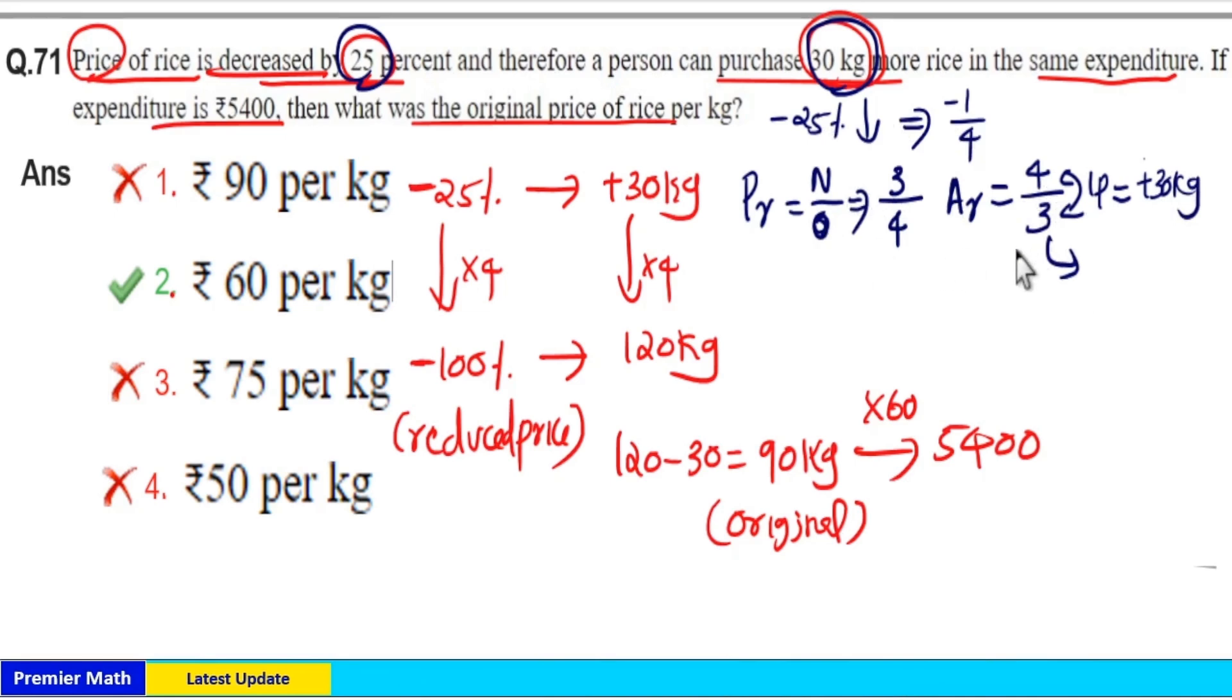Now old amount equals 3 parts, so 3 into 30, 90 kg is the old amount. 1 part is 30 kg means 3 parts equals 90 kg. So this 90 kg costs 5400, which means 90 into 60 equals 5400. So 1 kg costs 60 rupees.